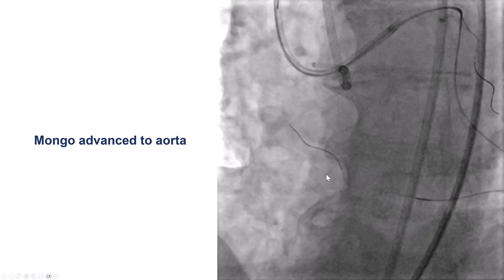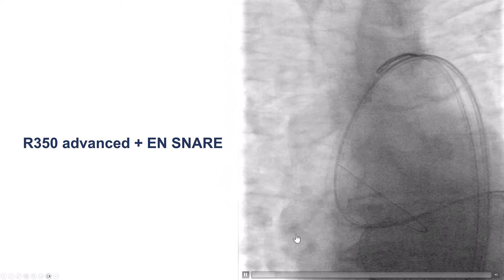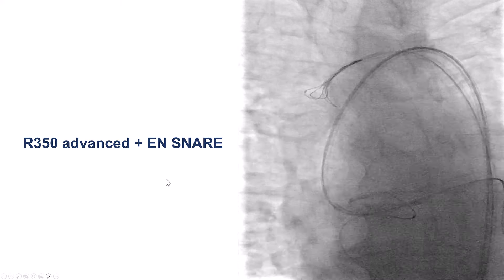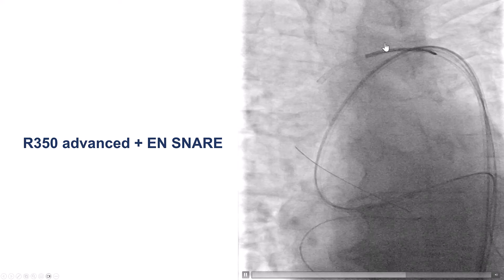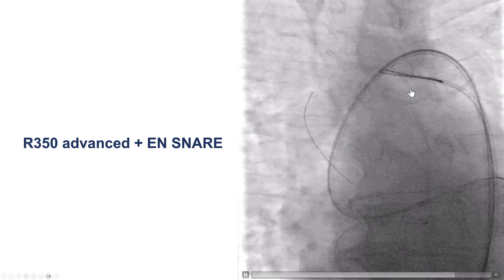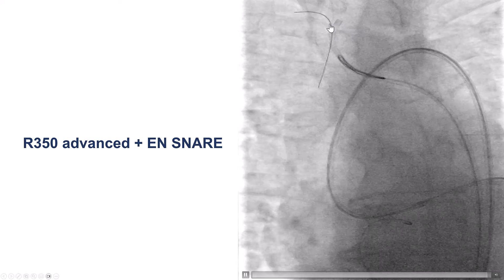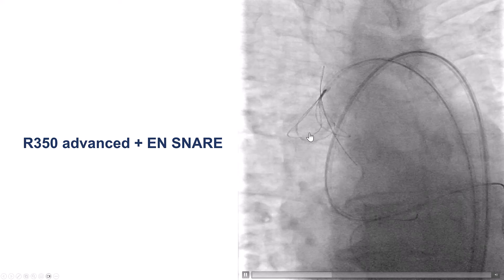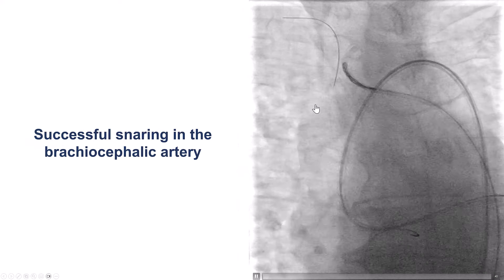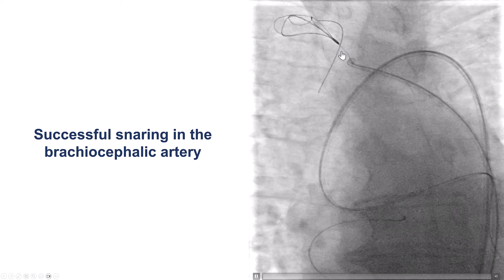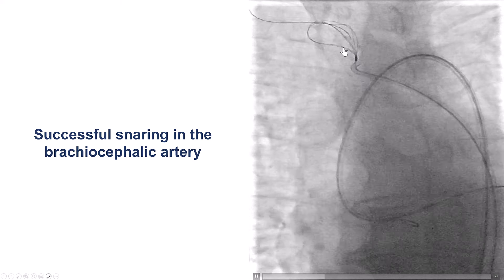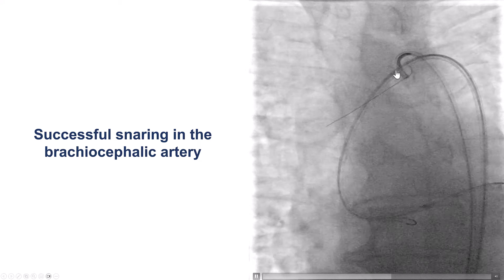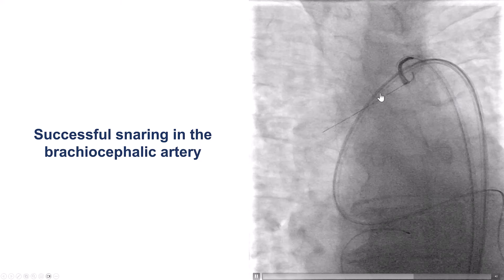We were able to advance a retrograde Gladius Mongo all the way into the aorta. We then advanced the microcatheter into the aorta and switched the Mongo for an R350 guide wire. The next step was to try to snare the wire using an N-snare. Unfortunately, we had a lot of difficulty snaring the guide wire — it looked like it was going through, but it was actually in a different plane. Eventually, we advanced the guide wire into the brachiocephalic, got the snare in the brachiocephalic where the space is smaller, and were able to successfully snare the R350 using a JR4 and an N-snare.